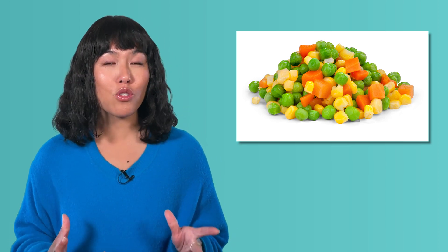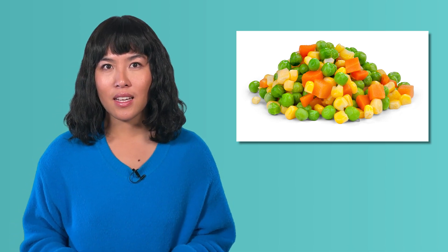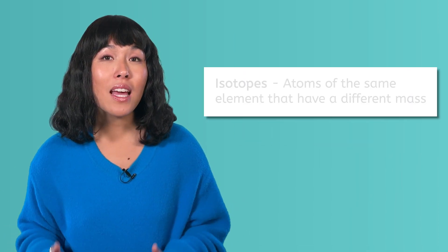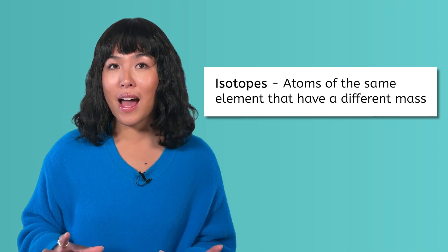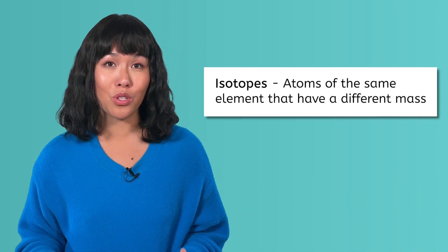Well, that is sort of how atoms work. Each sample of an element has a mix of different versions of the same element, usually just two or three versions, each with a different mass. Atoms of the same element that have a different mass are called isotopes.